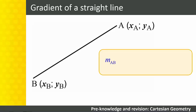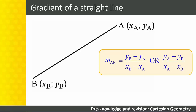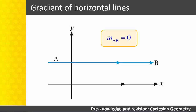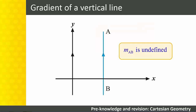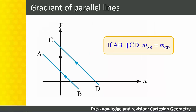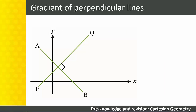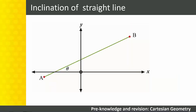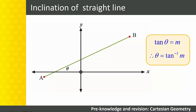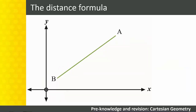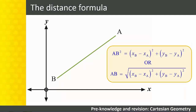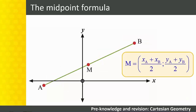The gradient m of a straight line is calculated by the difference between the y-values of any two points on the line divided by the difference between the x-values. Horizontal lines always have a gradient of 0, and vertical lines have an undefined gradient. If lines are parallel to each other, they have equal gradients. Lines that are perpendicular to each other have the property that the product of their gradients is equal to −1. The inclination of a straight line is the angle it makes with the x-axis, which we term theta, and tan(θ) = m, so we can use the inverse tan function to find theta from m. The distance formula is based on the Theorem of Pythagoras and is used to calculate the distance between any two points. The midpoint formula is used to determine the coordinates of the midpoint of a line segment.